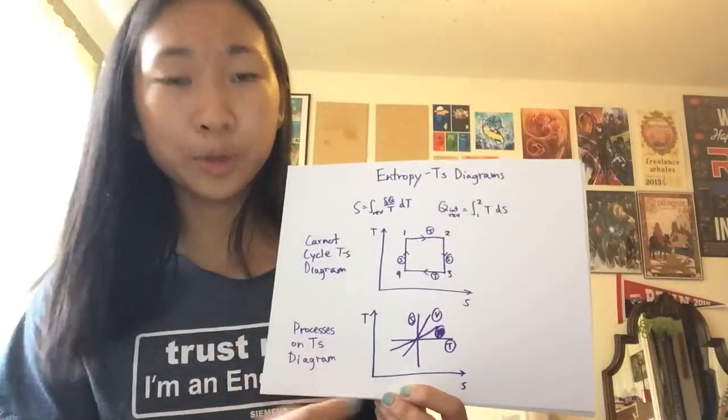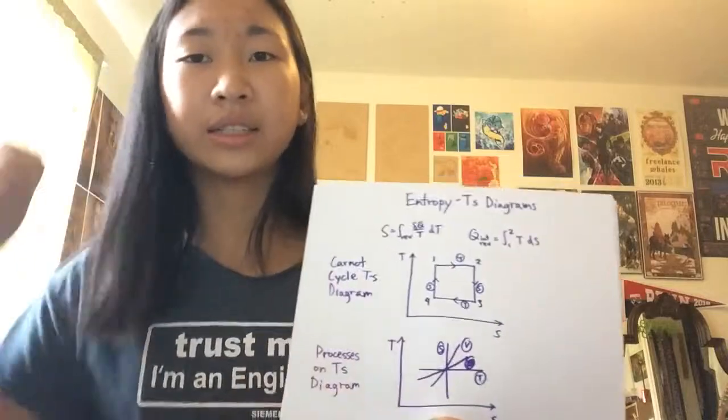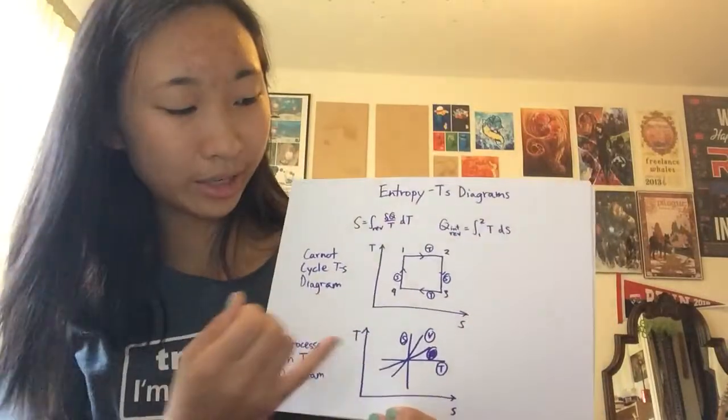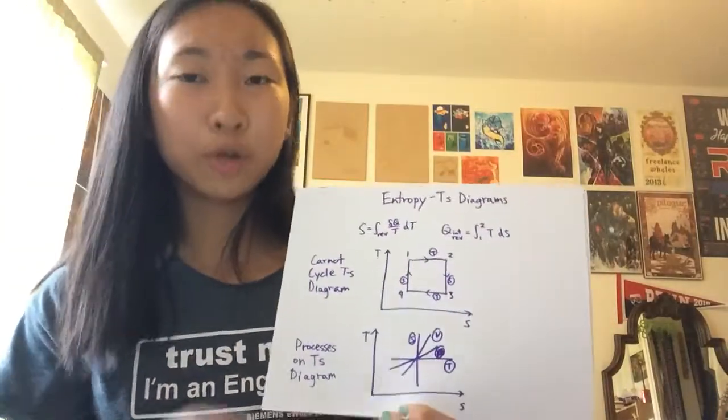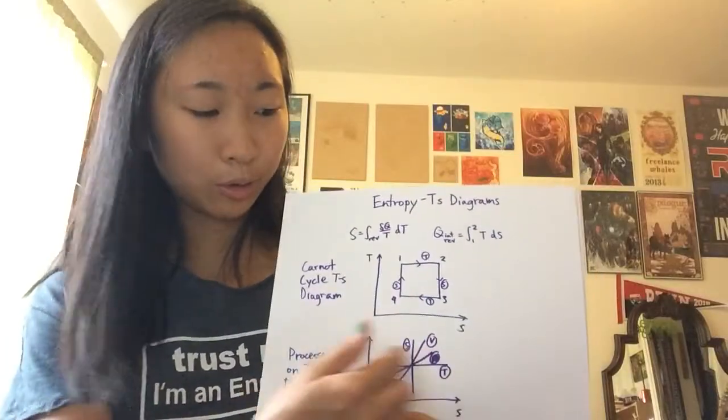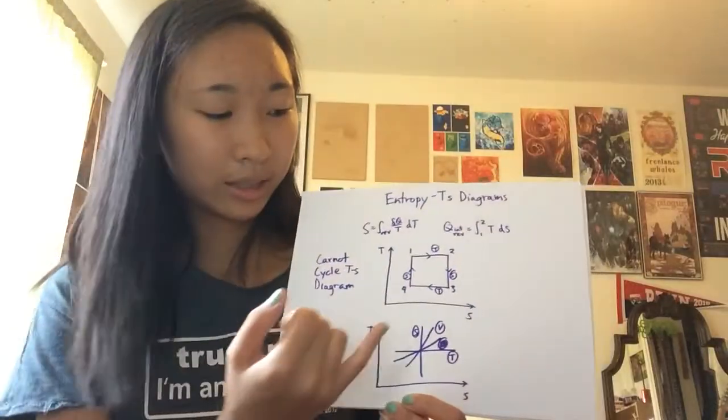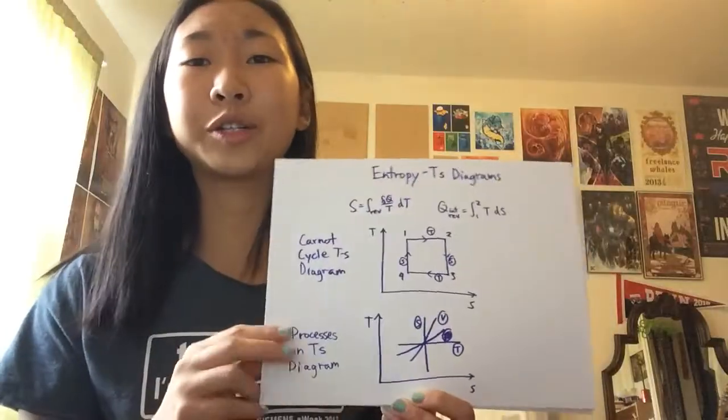On a TS diagram, you're going to have the constant S isentropic line as a vertical line, the isothermal or constant temperature lines as a horizontal line, and then the constant volume line being slightly steeper than constant pressure.